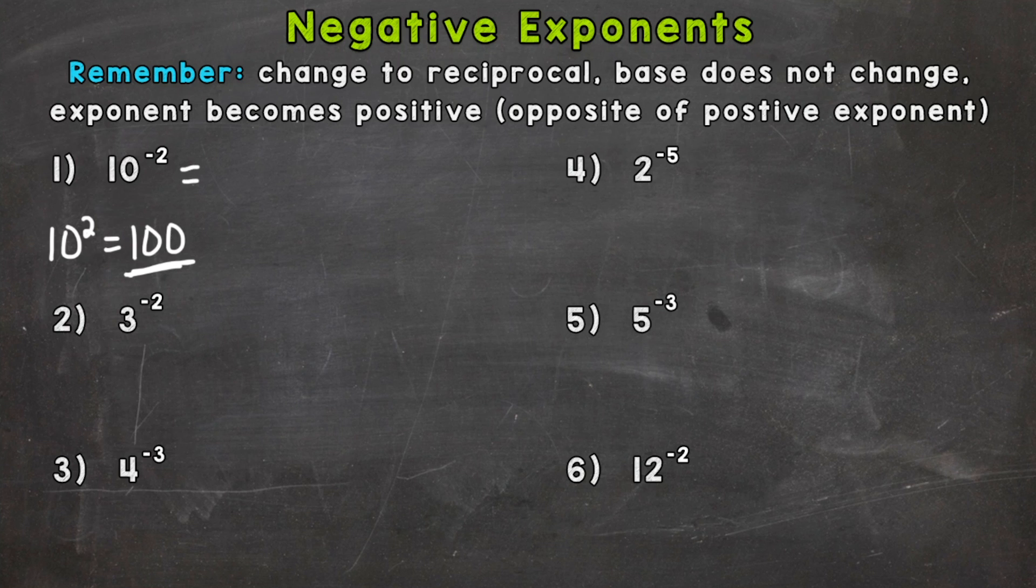What we need to do is change 10 to the power of negative 2 to its reciprocal, which means we're going to flip 10 to the power of negative 2 to the denominator. We can make any whole number into a fraction by placing it over 1. Now we have a fraction equal to that original exponential form of 10 to the power of negative 2.